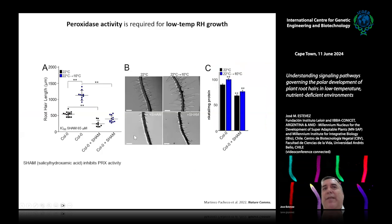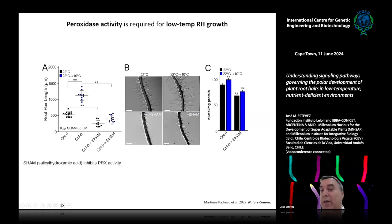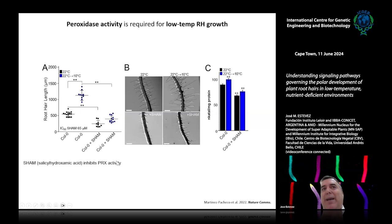Using a pharmacological approach with SHAM — an inhibitor of peroxidase activity — we showed that when we apply SHAM, the upregulation of root hair growth by low temperature is completely abolished, confirming peroxidase activity is required for this low temperature response. The amount of SHAM applied was very low, sufficient to affect only root hair growth without affecting overall root growth, which is why total peroxidase activity is still present in the whole root.